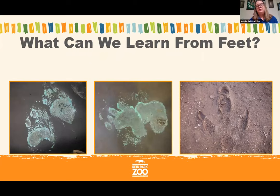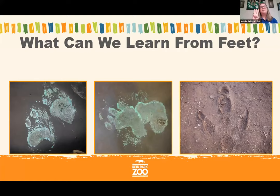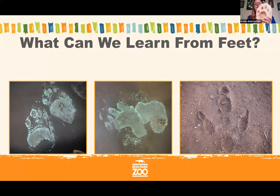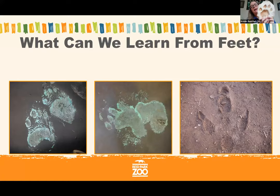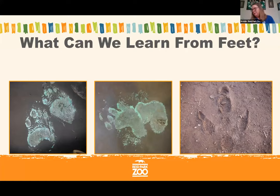We can learn a lot from animal feet because animals use their feet in different ways, so they look very different. On this slide we have Andean bear prints on the left, giant anteater front and back paw prints in the middle — they look quite different from each other — and a rhea on the right, a cousin to the ostrich with three toes instead of two. I also have a lion footprint model here. Footprints are left behind when an animal steps on something soft like snow, dirt, or mud — this is called a track. Scientists can tell which animals live in a place by looking for tracks.